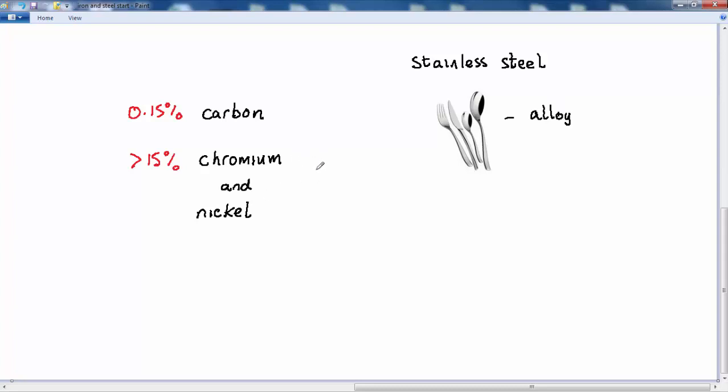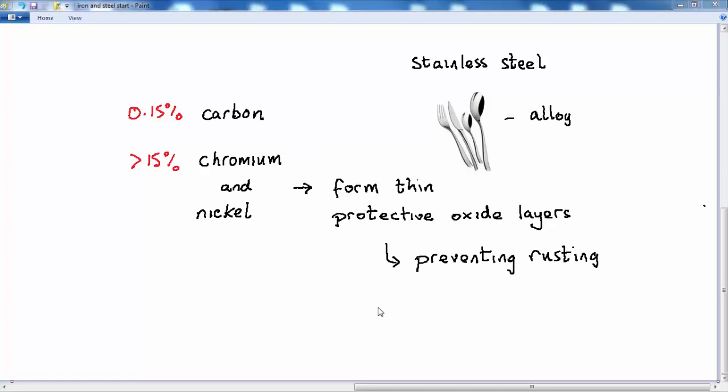And what makes it so useful is that the chromium and nickel present in the structure react with oxygen to form very thin protective oxide layers, which prevents the iron in the steel from oxidizing or rusting. So one of its important uses is that of manufacture of cutlery or kitchen utensils.